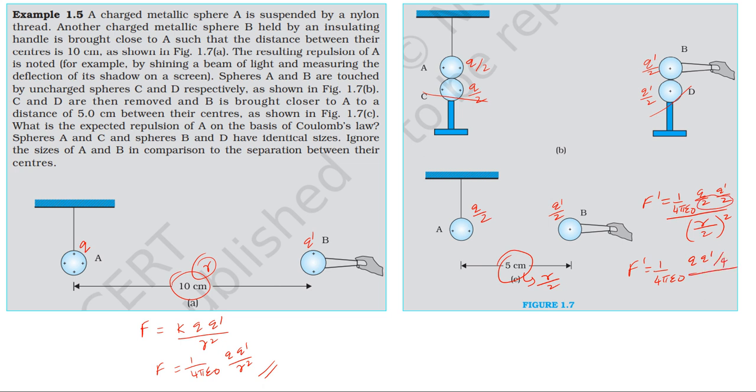q1 is q by 2 into q' by 2 divided by r square. R is now 5 cm, so r divided by 2 squared gives r square by 4. The force remains unaltered.